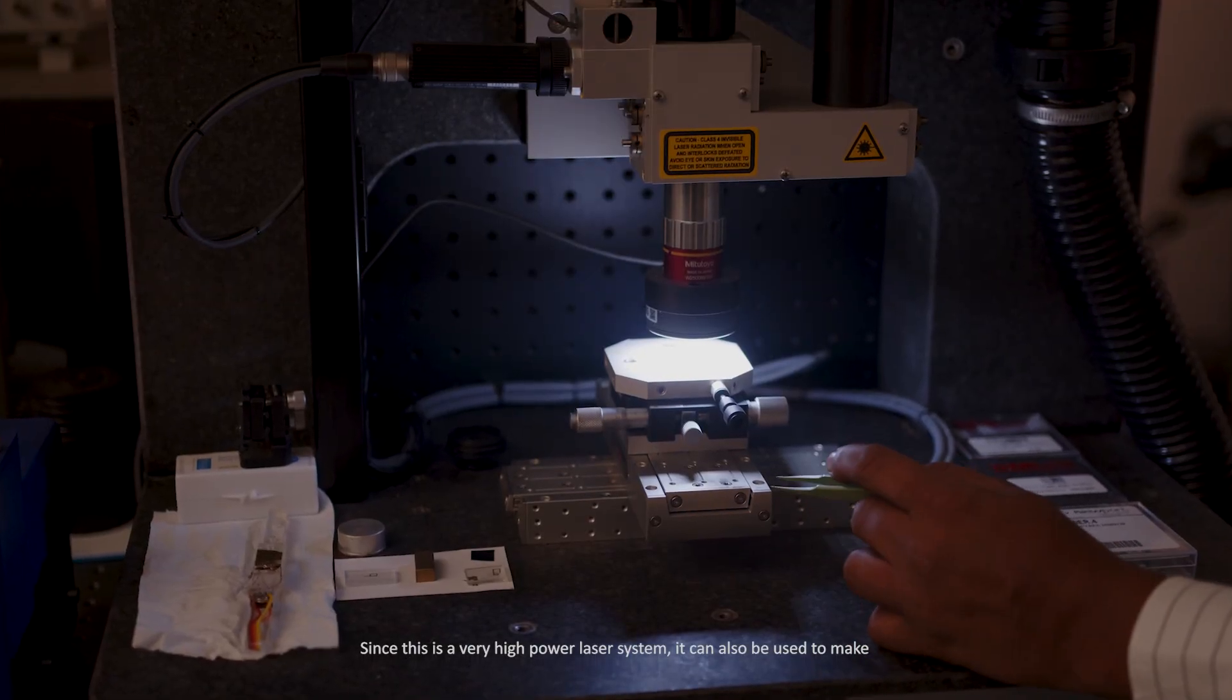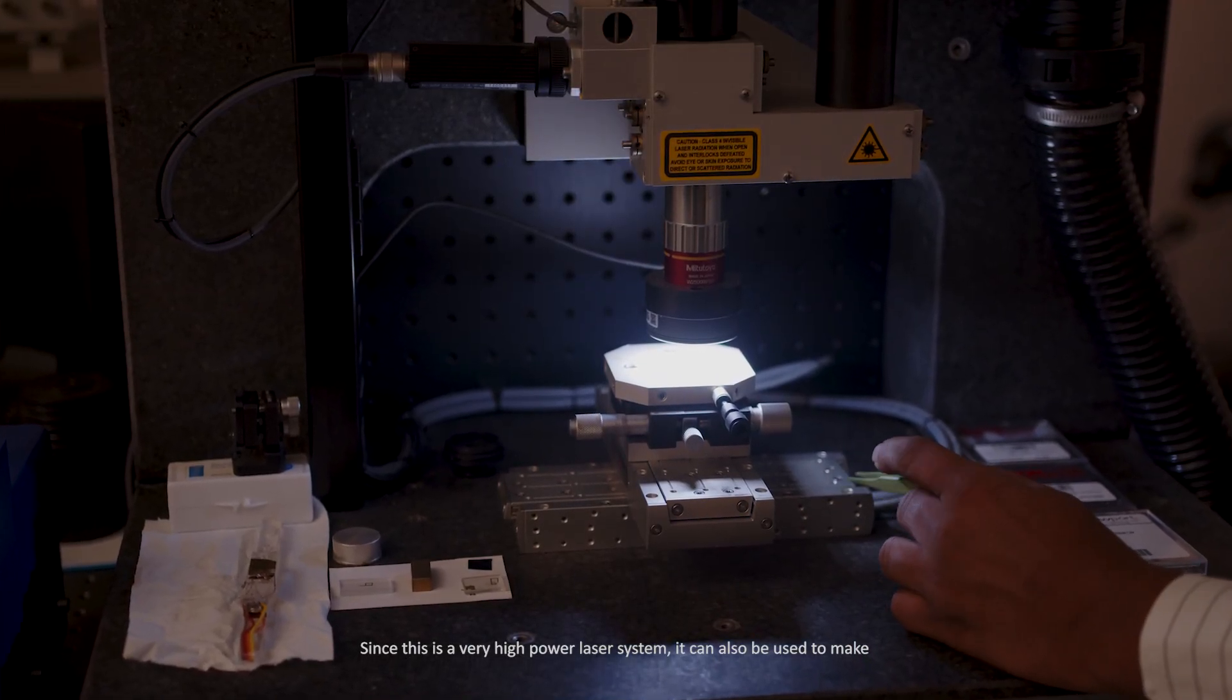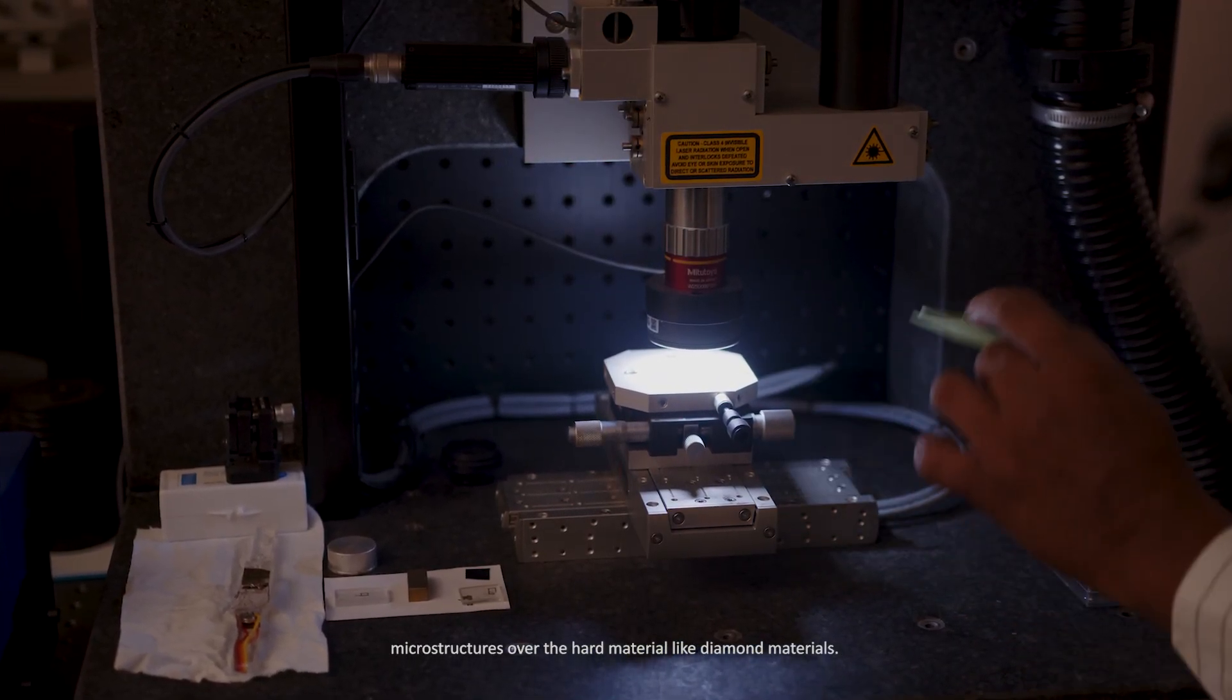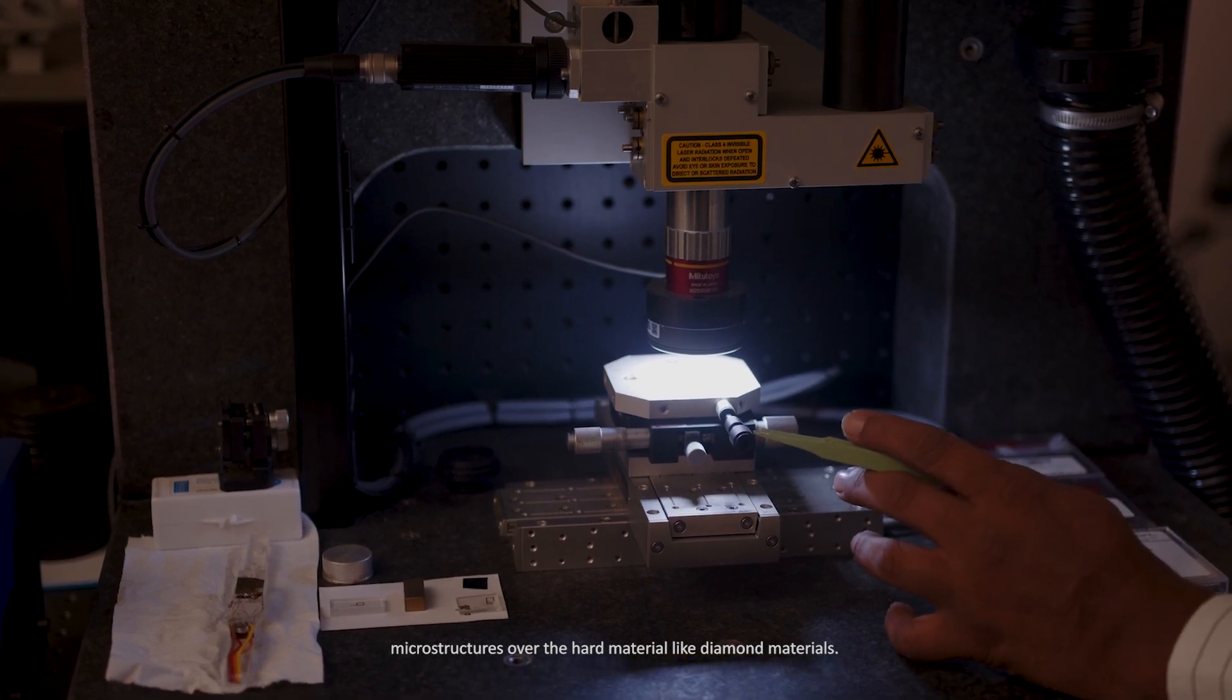With this facility we can fabricate different types of microstructure designs including 3D microchannels, 3D optical waveguides inside transparent materials like fused silica, quartz, lithium niobate, and polymer. Since this is a very high power laser system, it can also be used to make microstructures over hard materials like diamond.